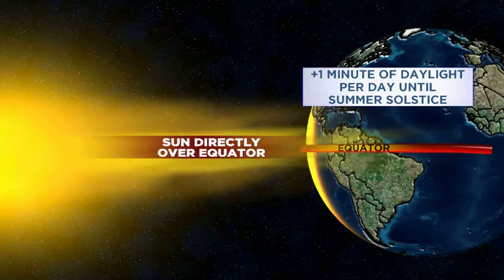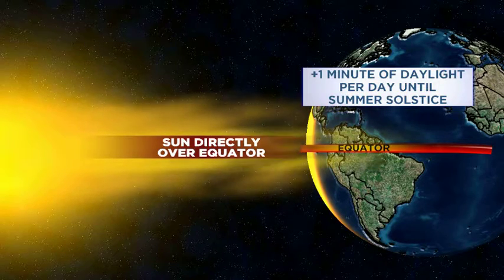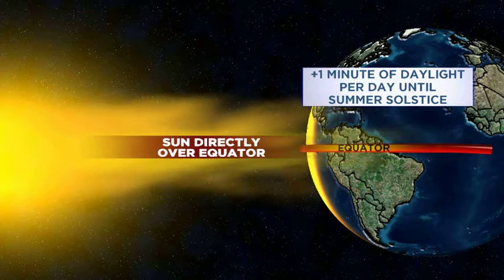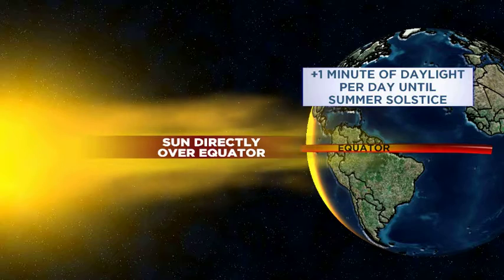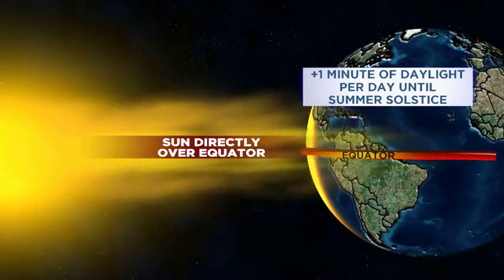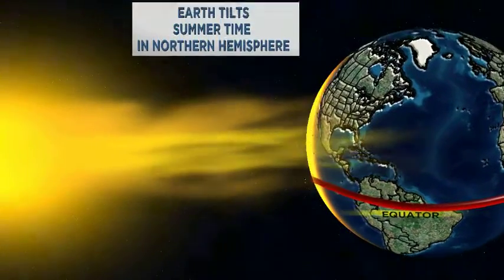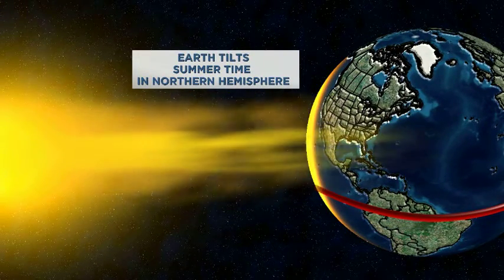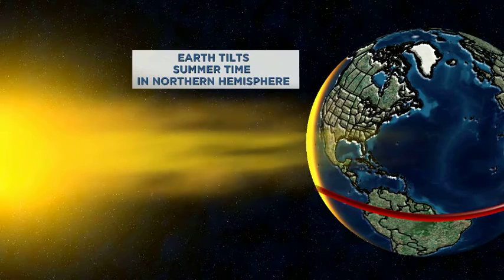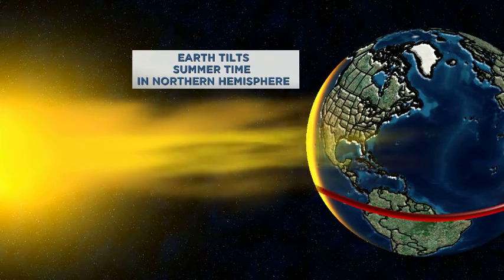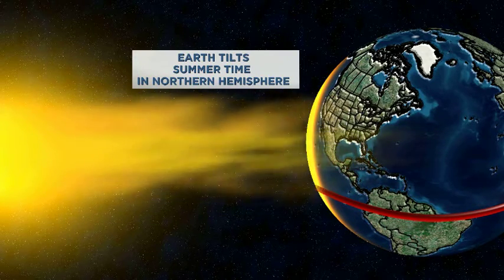If you're a lover of longer days, this is your season — we will continue to gain anywhere between one to two minutes of daylight every single day, at least until June 21st, the summer solstice. That's because the Earth will continue to tilt another 23.5 degrees, bringing us to summertime in the Northern Hemisphere.